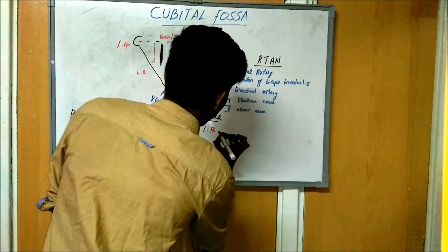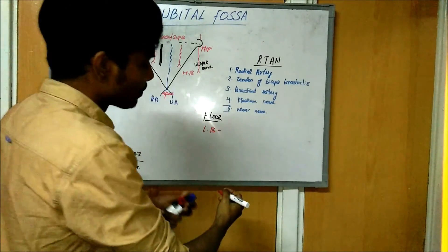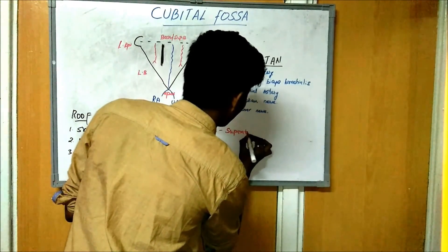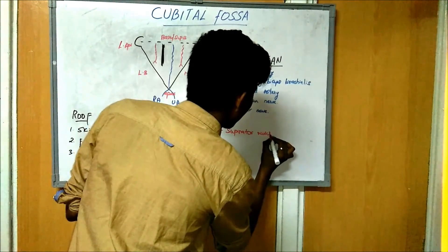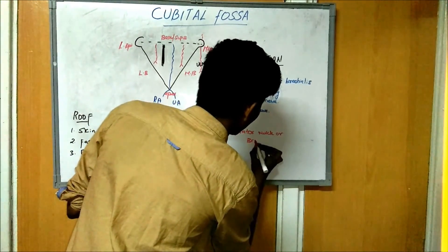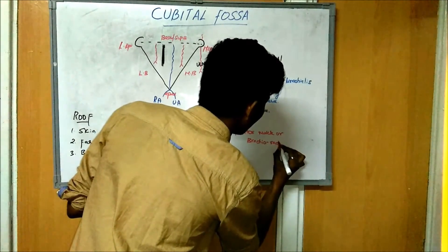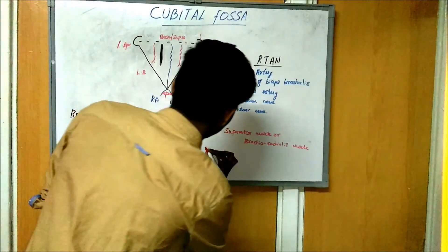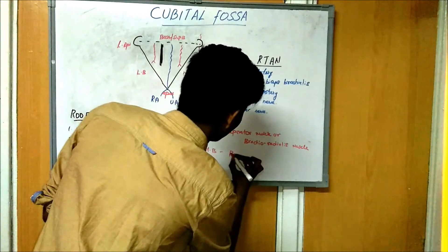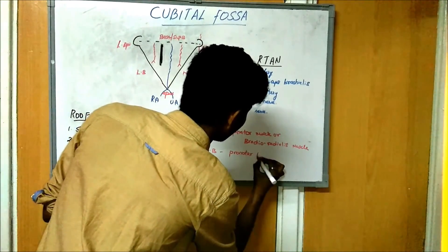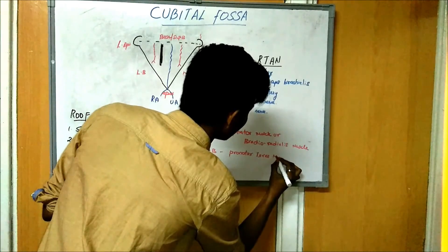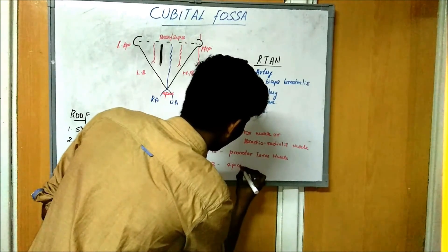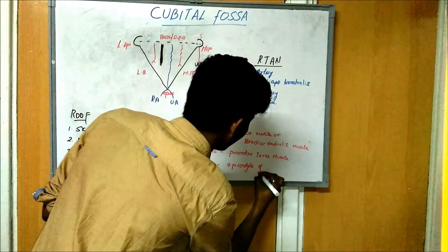The floor: the lateral border is the supinator muscle and the brachioradialis muscle; the medial border is the pronator teres muscle; and the superior border is the epicondyle of the humerus.